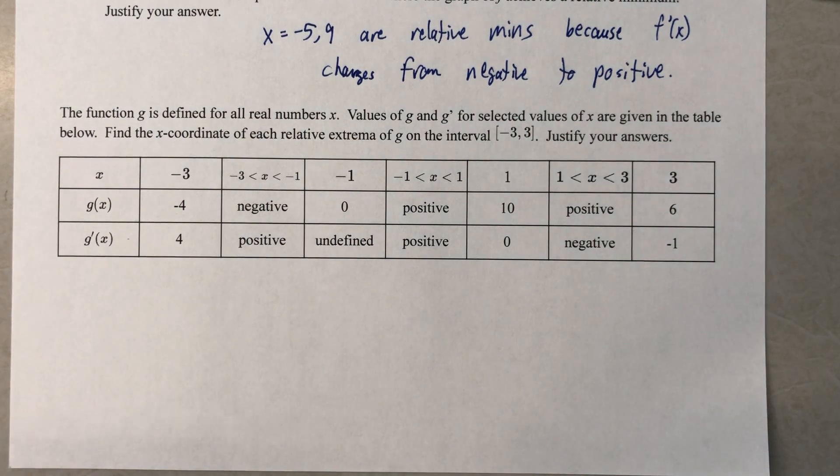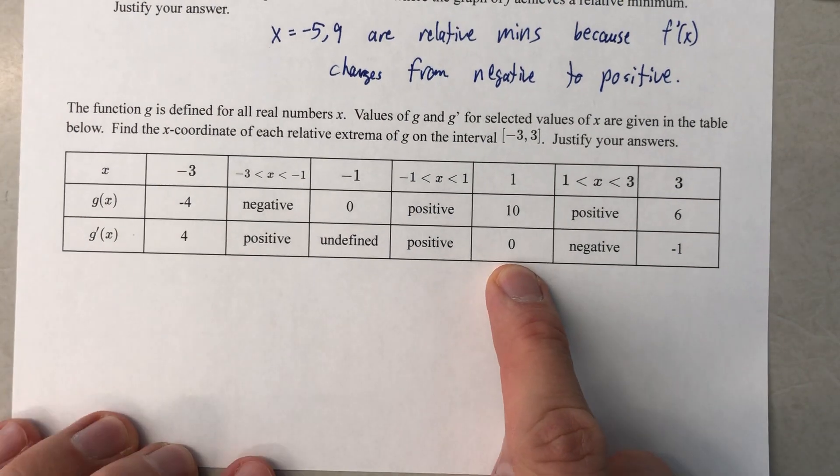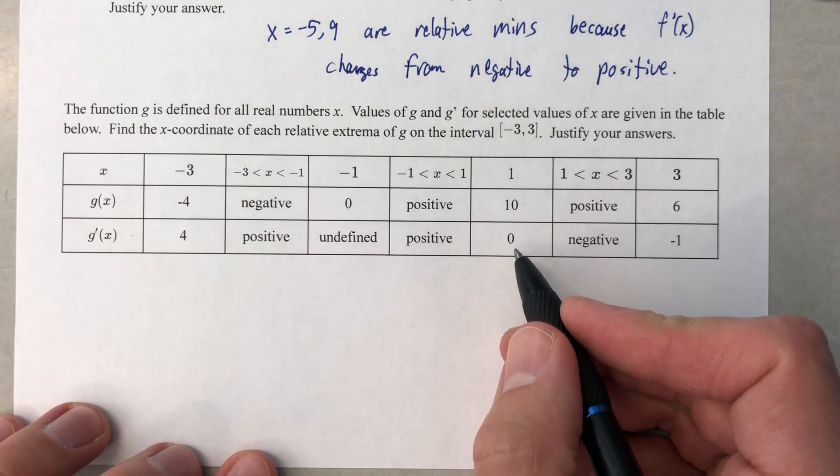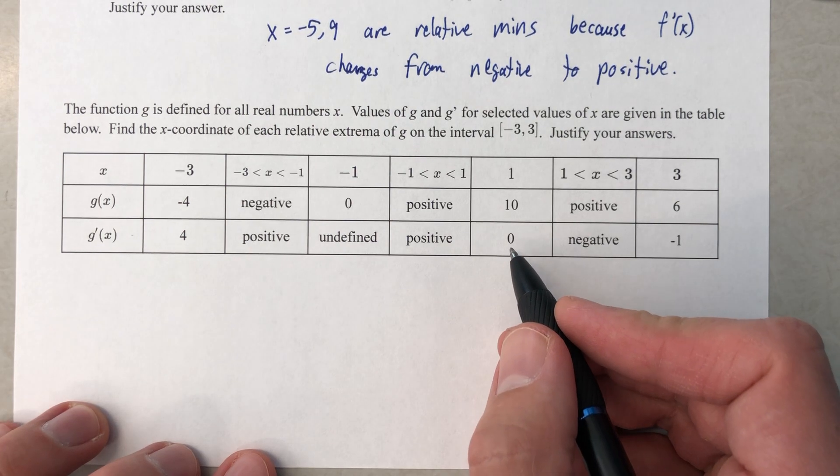I need to figure out everywhere that the derivative equals zero. So we have a place where the derivative equals zero.